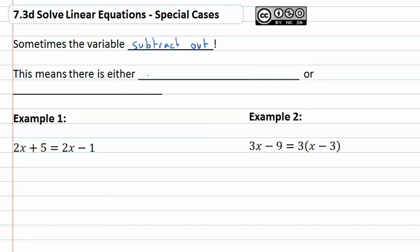If it subtracts out, it means there are either infinite solutions, which means any number will work in the equation and it will always be true, or there is no solution, which means there doesn't exist any number that when you plug it into the equation it works. It gives us a true equation.